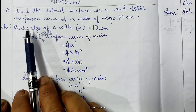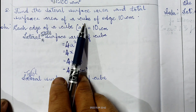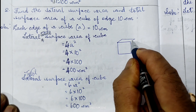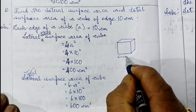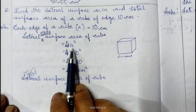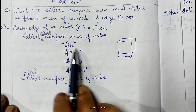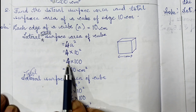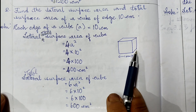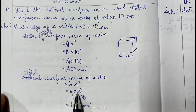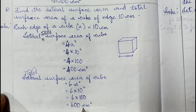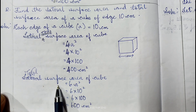Question 2: Find the lateral surface area and total surface area of a cube with each edge 10 cm. Lateral surface area = 4A² = 4 × 10² = 4 × 100 = 400 cm². Total surface area = 6A² = 6 × 100 = 600 cm². So 400 cm² and 600 cm² are the lateral and total surface areas of the cube.